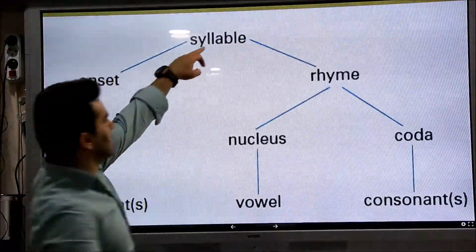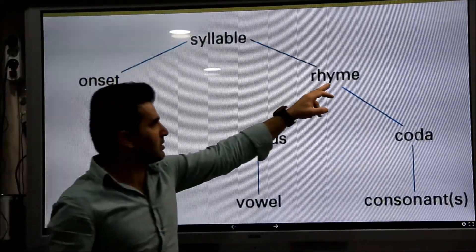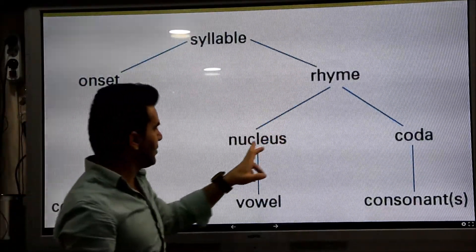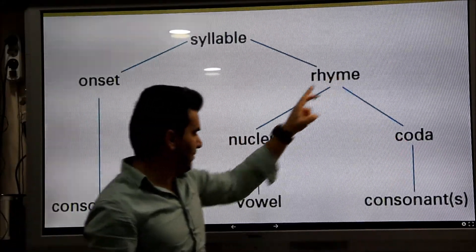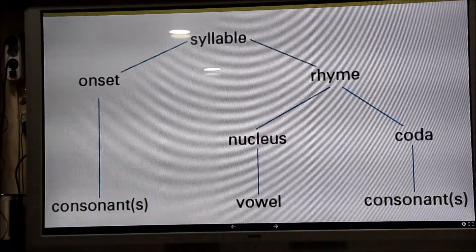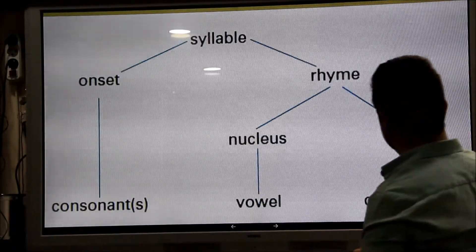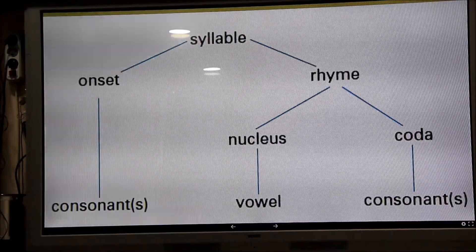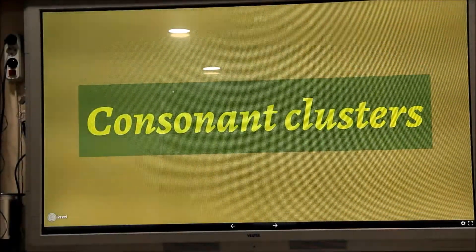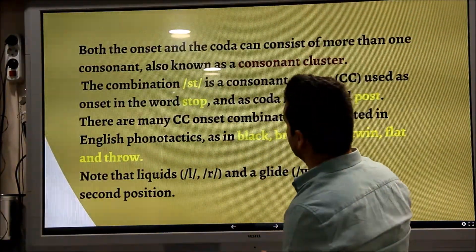So, syllable consists of onset and rhyme. Onset is consonant; rhyme contains nucleus and coda — nucleus is vowel, coda is consonant. Onset and cluster.